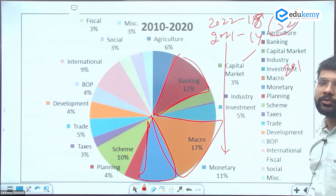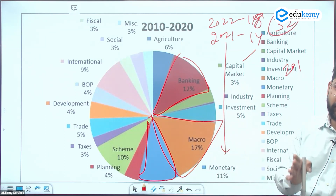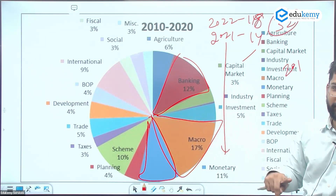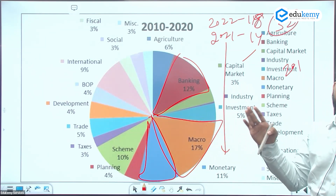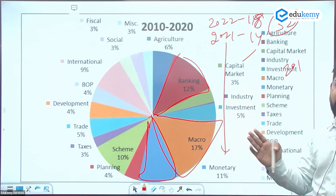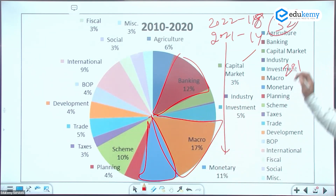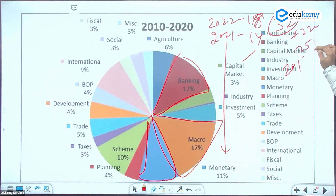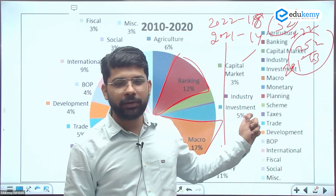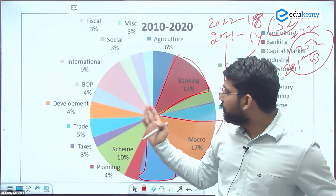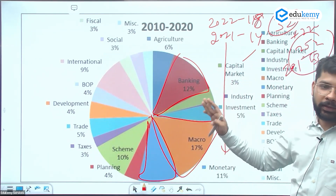Agriculture questions are sometimes counted under geography, so we avoid double-counting. If the question concerns MSP or fiscal costs, it is counted under economy. Including such adjustments, approximately 252 questions came from economy over the last 13 years, meaning 20-21 questions per year on average — though it can range between 15-16 and 20-21.